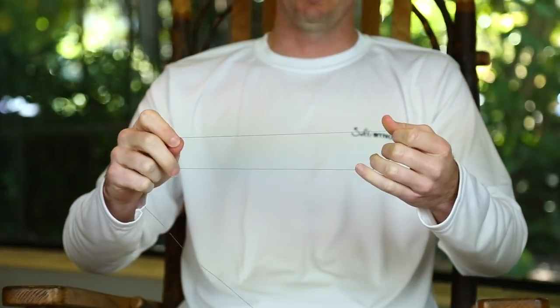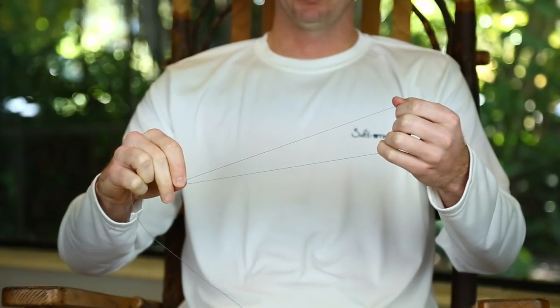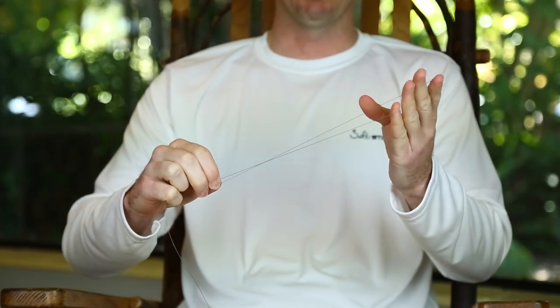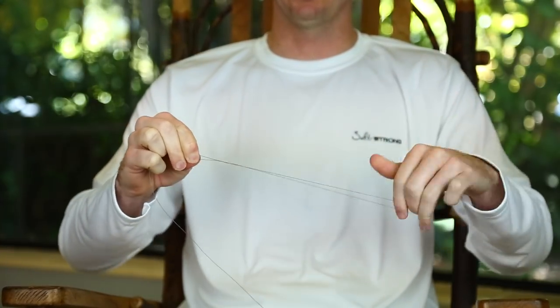Alright so the first step is to just get a loop in your line. This is simply a tag end and just create a loop and what you need to do is make about 20 to 25 wraps or just simple twists in this line. So my left hand is on this side with the loop so I'm gonna get in there and just start twisting.